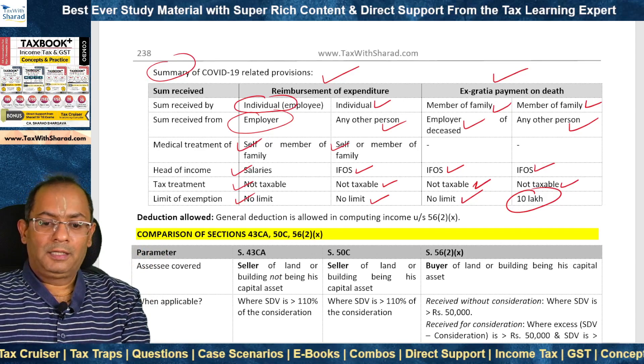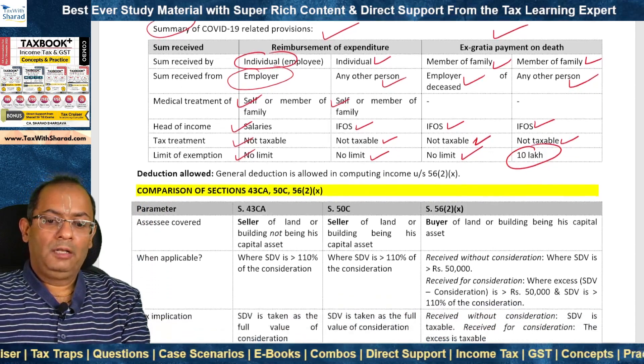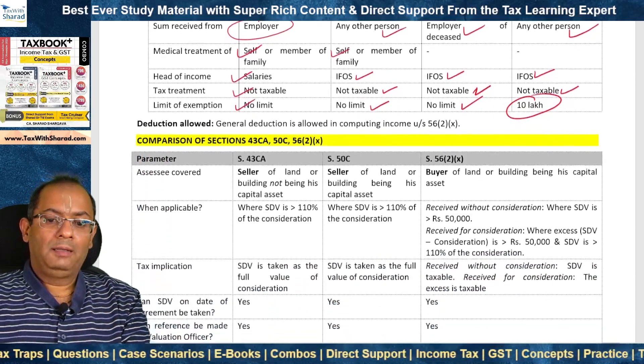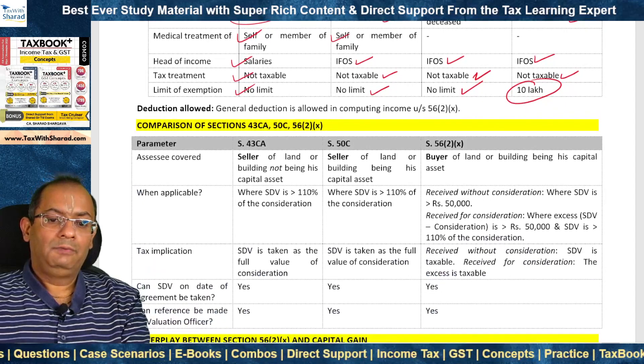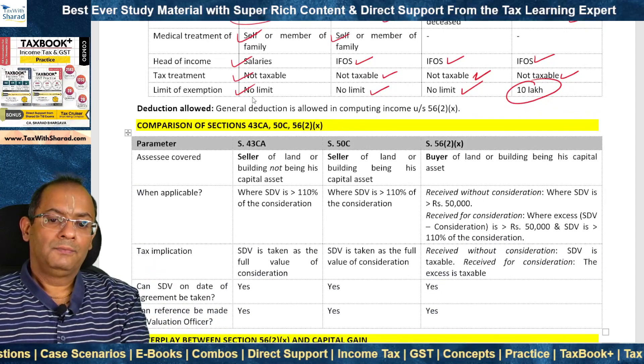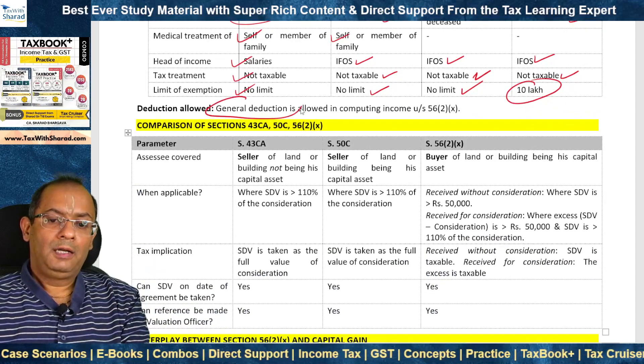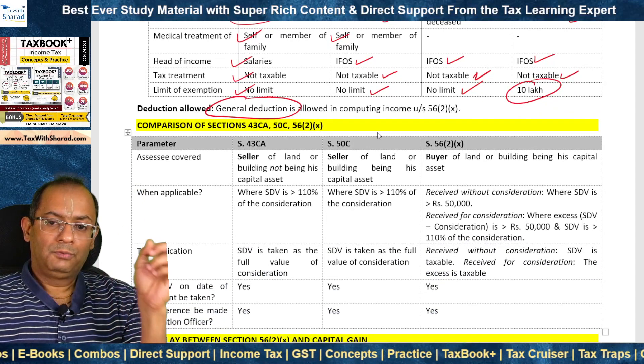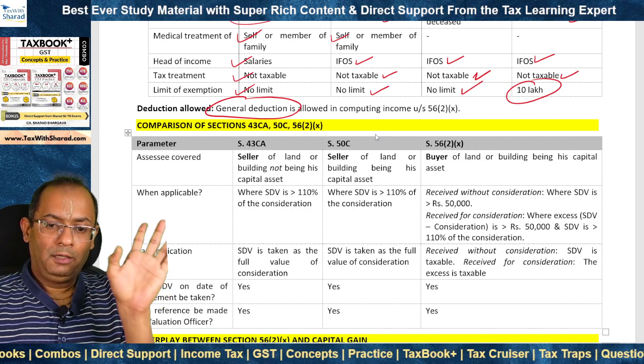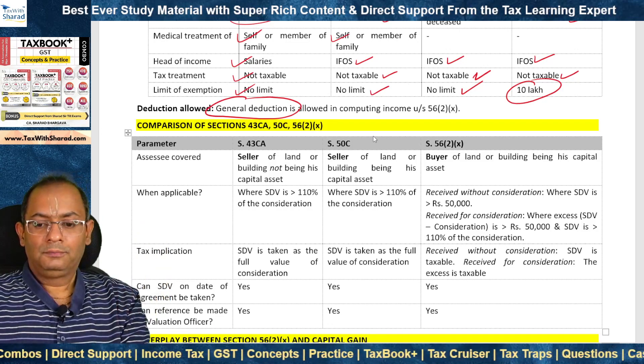The deduction allowed in computing income under Section 56(2)(x) is the general deduction — which we noted at the beginning of this topic: any revenue expenditure laid out wholly and exclusively for the purpose of making or earning income.